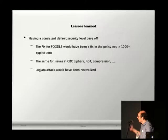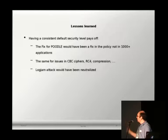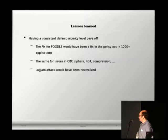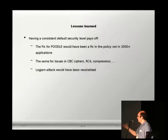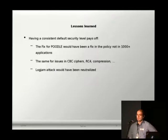However, it pays off. The fix for Poodle — which was simply disabling SSL 3.0 — would have been a single policy change rather than fixing all applications in Fedora. The same applies to new issues found in RC4, CBC ciphers, and TLS compression. As mentioned, the LogJam attack wouldn't have made the news at all.